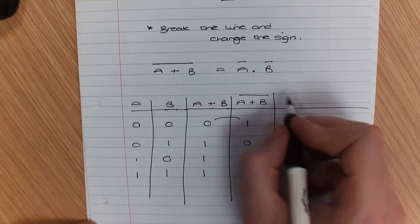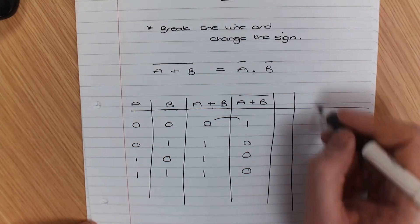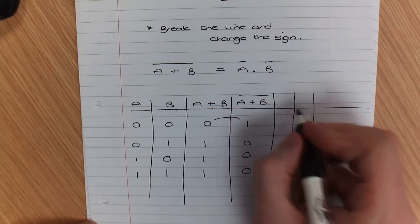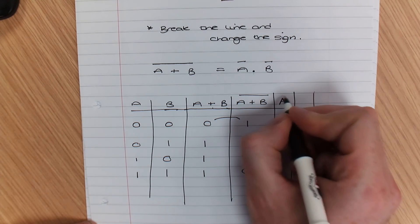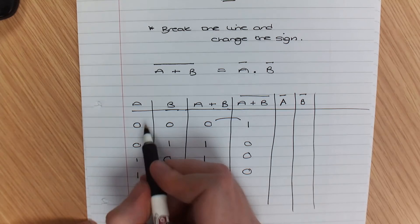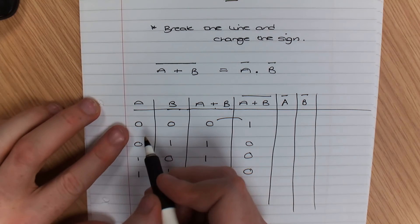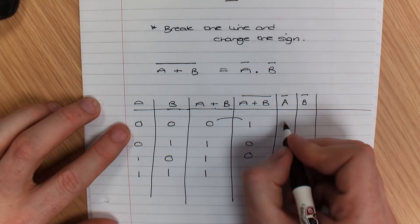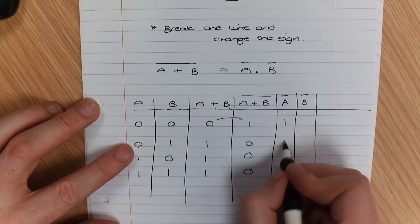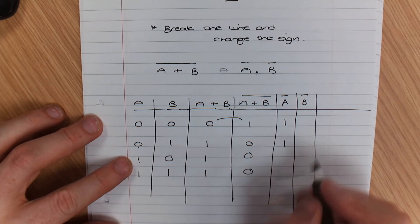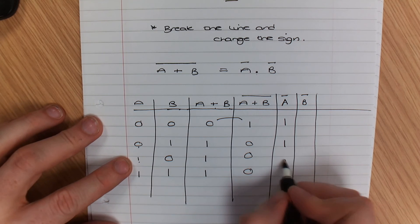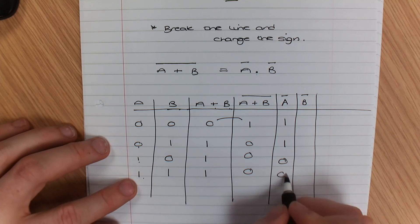So now I want to show you we've got not A, not B. So let's have a look over here. Not A is 1, not A is 1, not A is 0, not A is 0.